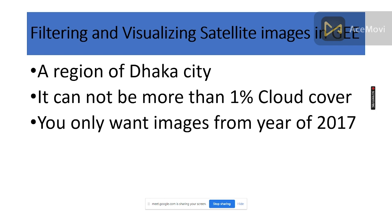To summarize the three filtering factors: first, select your region; second, filter by image properties such as cloud cover percentage; third, specify a time period such as the year 2017, summer season, rainy season, or any other time period.